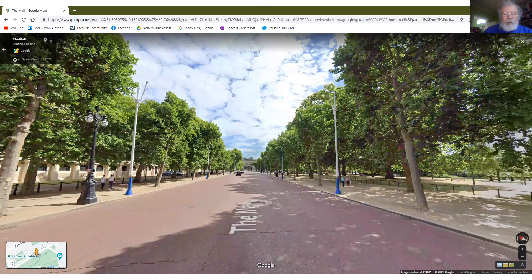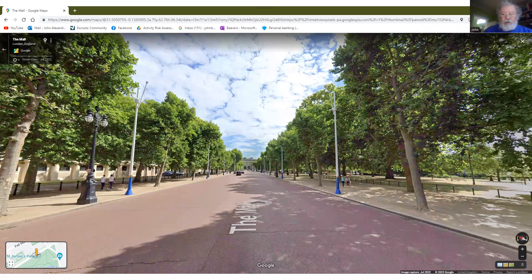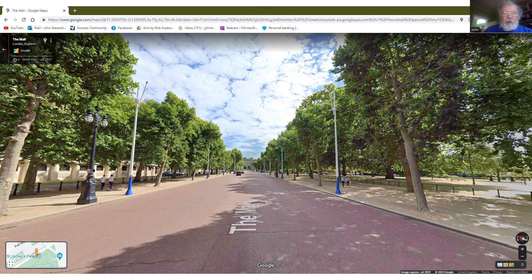And as we continue down the Mall, our uncertainty is going to increase. Remember, we can only look back at our reference point Admiralty Arch there in the distance. We can't see what we are actually approaching.